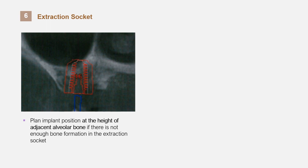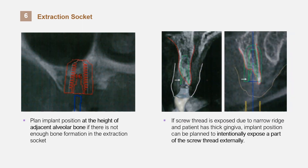If osteogenesis is incomplete at the tooth extraction site, positioning the implant can be difficult. In such a case, it is possible to set the implant position according to the height of the adjacent alveolar bone. Also, if the screw thread is exposed due to a narrow ridge and the patient has thick gingiva, you can plan the implant so that the screw thread is exposed on the palatal side. However, if you are planning to perform GBR, you should plan it to have the screw thread exposed on the buccal side. If the conditions are poor for placing an implant, the doctor's opinion may be necessary for diagnosis.